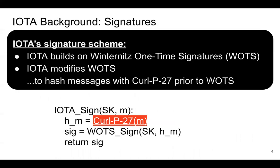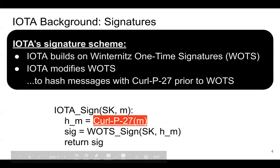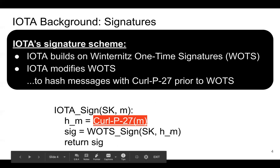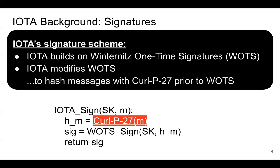IOTA builds on Winternitz one-time signatures but makes a change to how they're normally thought about. Winternitz one-time signatures often have the property that the signature is proportional in size to the message being signed. To ensure that signatures are of constant size regardless of how large the message is, IOTA's signature scheme hashes the message down using curlP27 to a constant size, and then uses its variant of Winternitz one-time signatures to sign this hash. That way signatures are always the same size.